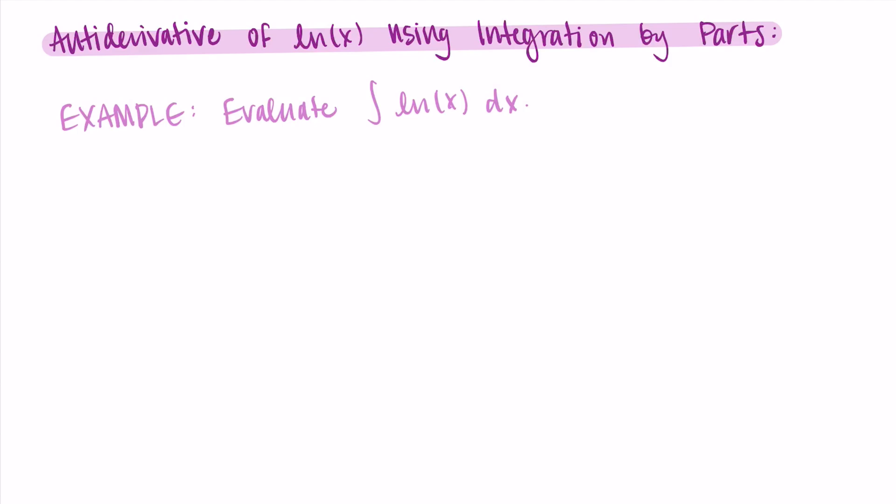I'm going to think of this as 1 times natural log of x. So I'm going to choose 1 as either my u or my dv, and I'll choose ln as either my u or my dv. My options are 1 and natural log of x.